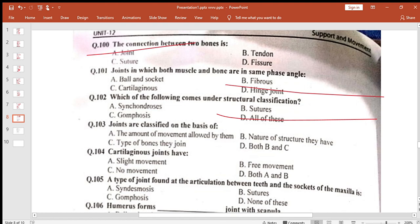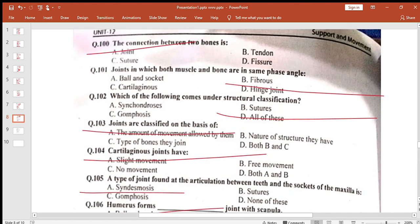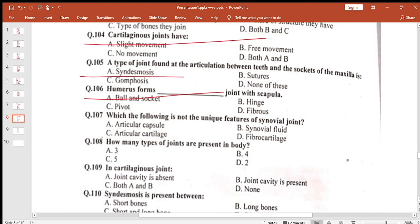Joint in which both muscle and bone are in same phase: hinge joint. Which come under structure classification? All of these. Joints classifying on basis of amount of movement allowed. Cartilaginous joint have slight movement. Type of joint found at articulation between teeth: gomphosis.